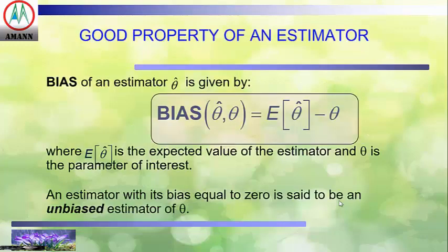One property of an estimator is bias. The bias of an estimator theta-hat is given by this equation, where E(theta-hat) is the expected value of the estimator and theta is the parameter of interest. An estimator with its bias equal to zero is said to be an unbiased estimator of theta. Unbiasedness is a desirable property of an estimator.